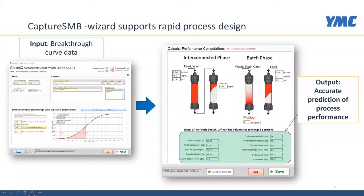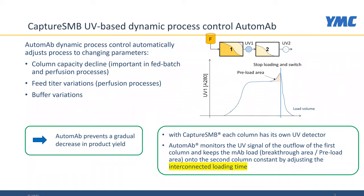There are quite a number of operating parameters that need to be defined in the Capture SMB process, which will have implications for process validation. We also want to be able to operate Capture SMB with a UV-based dynamic process control. The process control records the breakthrough signal of antibody breaking through from the first column, then stops the loading once a certain threshold area under the breakthrough curve is reached. This UV-based control feature is called AutoMap.